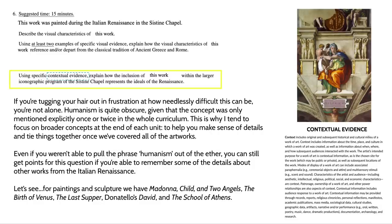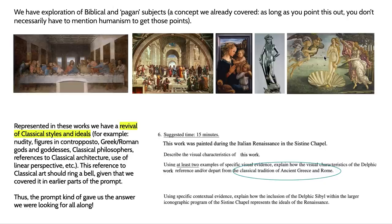Even if you weren't able to pull the phrase 'humanism' out of the ether, you can still get points on this question if you're able to remember some of the details about other works from the Italian Renaissance. We're going to use a similar technique as before when we were thinking about ancient Greece and Rome, but now focusing on the Renaissance. Thinking about works from the early Italian Renaissance, we have the Madonna and Child and Two Angels by Fra Filippo Lippi, The Birth of Venus by Botticelli, The Last Supper by da Vinci, David by Donatello, and Raphael's School of Athens — all pictured here for your convenience, though they will not be pictured on the exam.